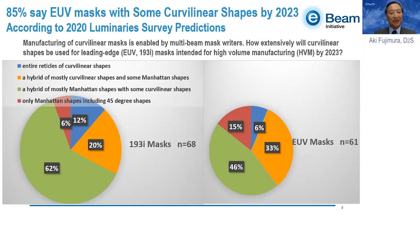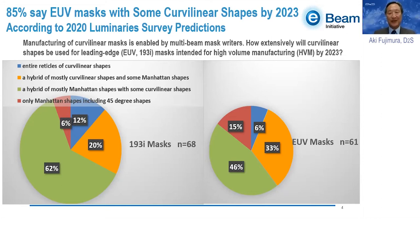Including 12% of luminaries who think some HVM masks for 193i will be predominantly curved linear — the entire reticle having curved linear shapes as opposed to just hotspots. Even in the EUV scenario, that number only decreases to 6%, showing high belief that curved linear shapes are desirable even with EUV — a more precise instrument.